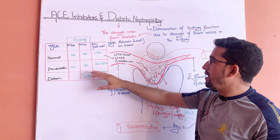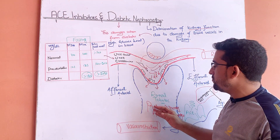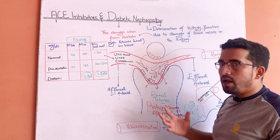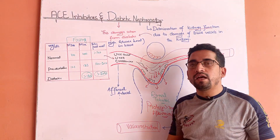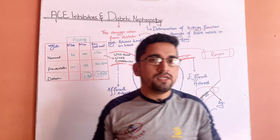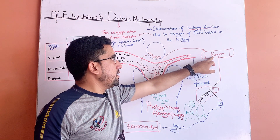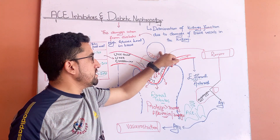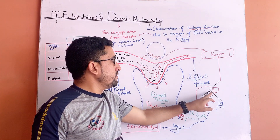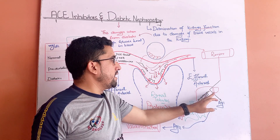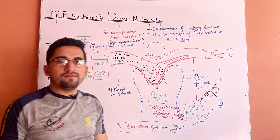To reduce the pressure at this level and also to reduce the amount of proteins and albumins in the urine, normally there is a substance known as renin that is released from the juxtaglomerular apparatus. This renin acts on angiotensinogen and produces angiotensin-1.